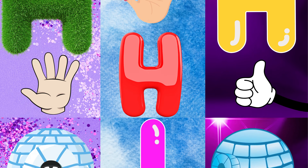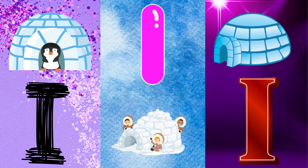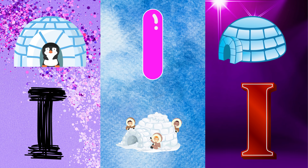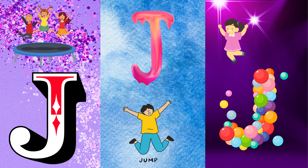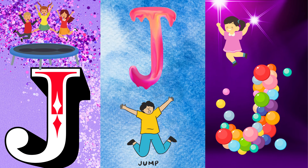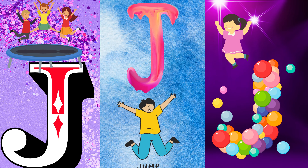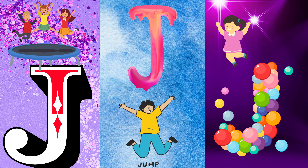I is for igloo, i-i-igloo. J is for jump, j-j-jump.